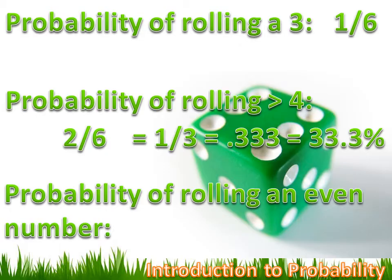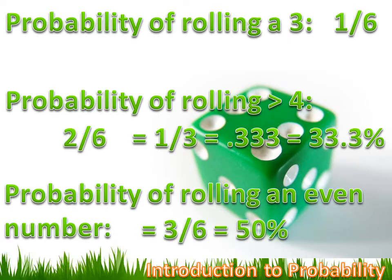What if I'm trying to find the probability of rolling an even number? I win if I get a two, a four, or a six, and I lose with a one, a three, or a five. So there are three ways to win and still six potential outcomes. My probability is three divided by six, or one half, or fifty percent.